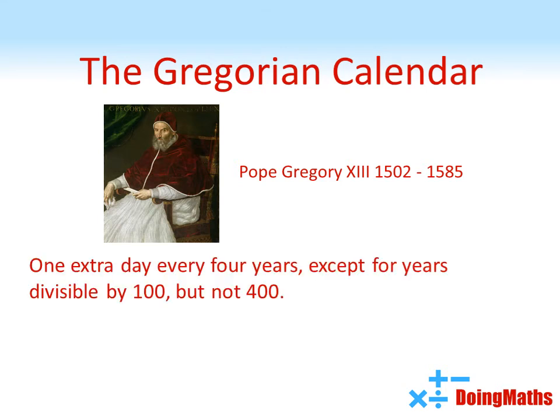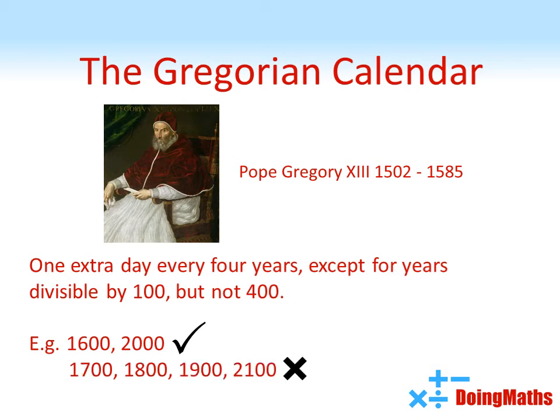Leap years were now every four years, except for those years divisible by 100, but not 400. So, for example, the years 1600 and 2000 were leap years, while the years 1700, 1800, 1900, and 2100 are not leap years.